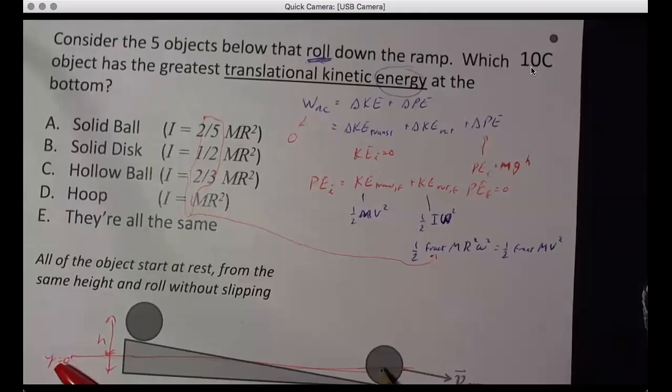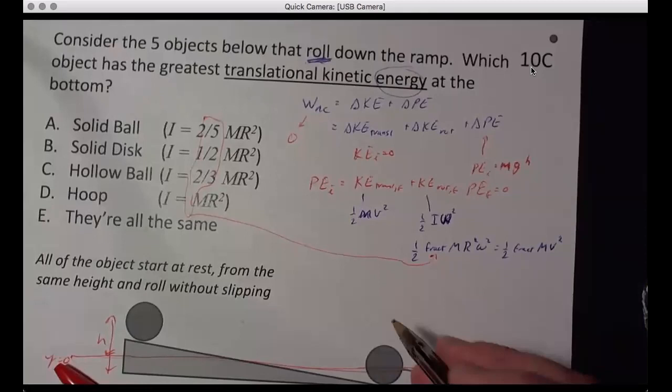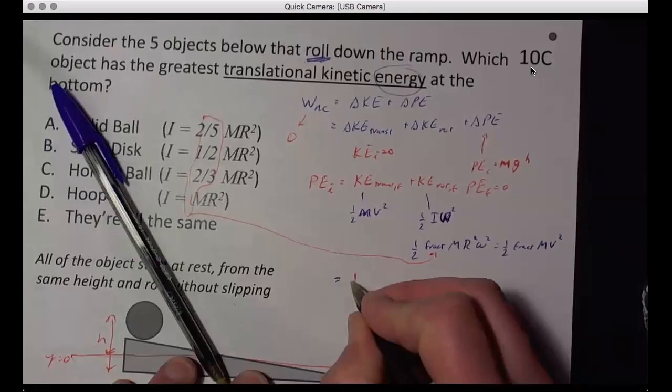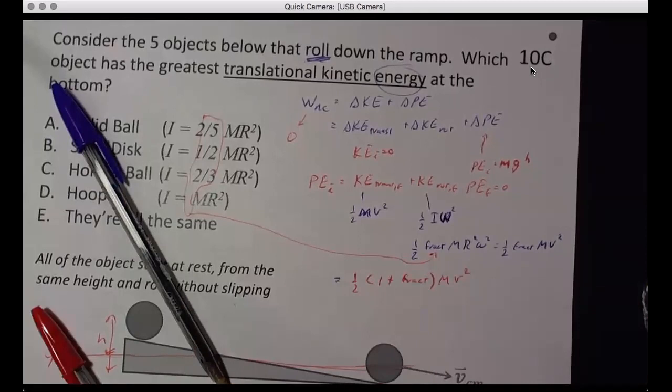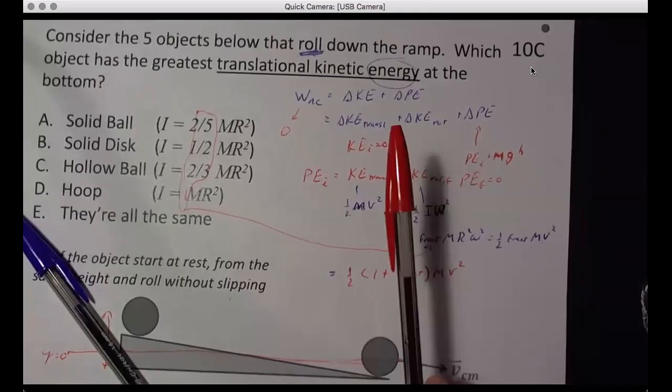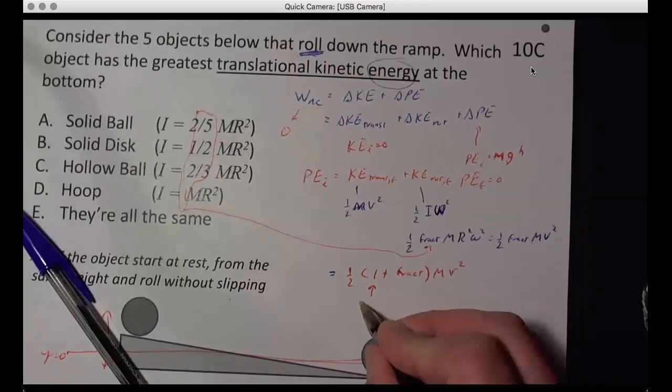Because the V tangential is the same as the V for rolling object. We did that before. And so what you find on the right hand side here, it's equal to one half times one plus the fraction times MV squared.